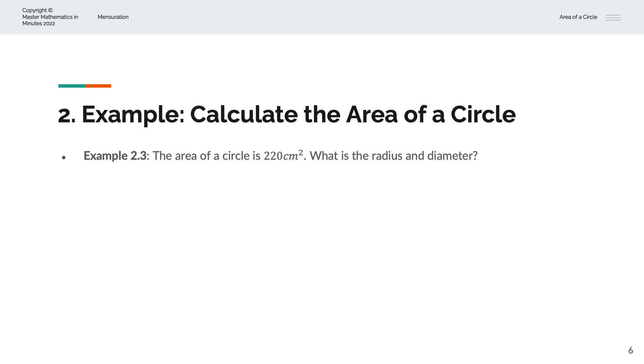In the third example, we're given the area of a circle is 220 centimeters squared. And we're asked to find the radius and diameter of the circle. And so we have area is equal to A, is equal to πr squared, and that is equal to 220.